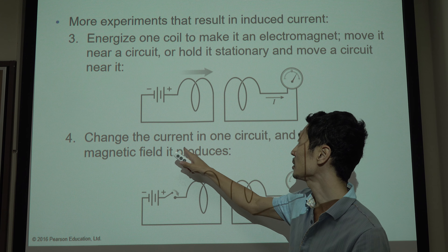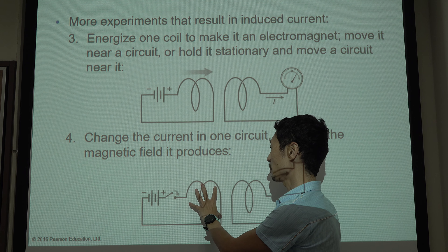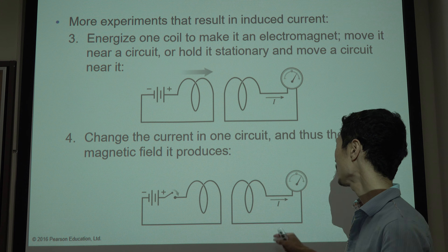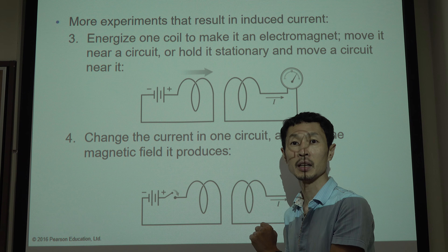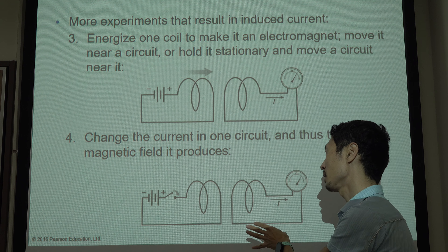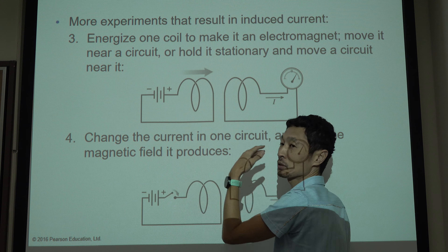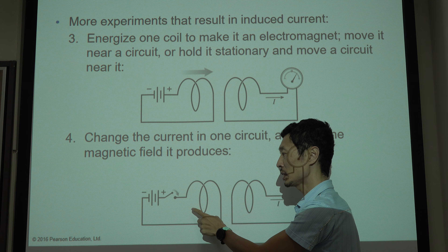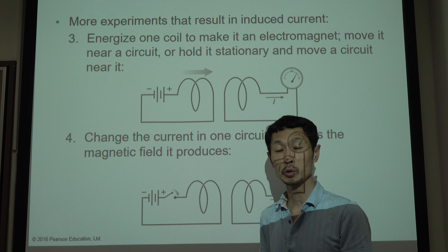The fourth example: change the current in one circuit, and thus the magnetic field it produces. If you change the magnetic field by connecting this circuit, the magnetic field is increasing and there will be an induced current. By starting a current here, the magnetic field is increasing as a function of time, and if it is a variable magnetic field, then another circuit has a current induced. In this case, the current is changing, so the magnetic field is changing, so there is an induced current.